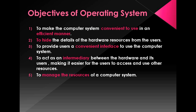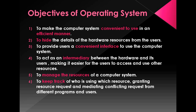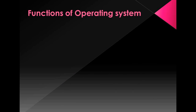The resources of the computer system are the different parts of the computer system — for example, the monitor, the keyboard, the processor, and other output devices like printers, microphone, speakers, etc. Sixth objective: to keep track of who is using which resource, granting resource requests, and mediating conflicting requests from different programs and users. Seventh objective: to provide efficient and fair sharing of resources among users and programs. These are the seven objectives of the operating system.